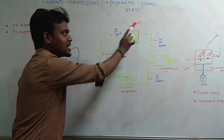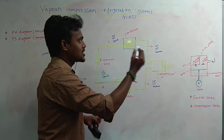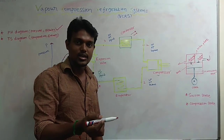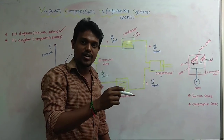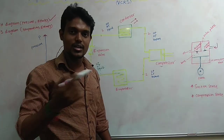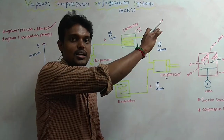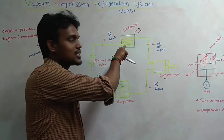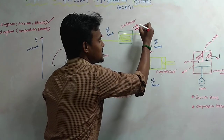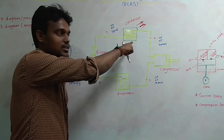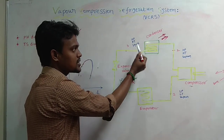This high pressure, high temperature vapor goes to the condenser. In the condenser, heat is rejected using water or air with a fan. The heat is rejected and the vapor changes phase to liquid. So the condenser output is high pressure, high temperature liquid. This is a phase change in the condenser.